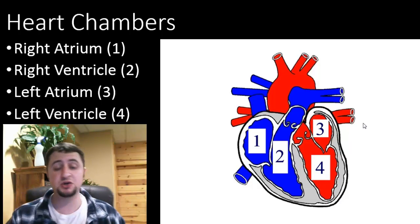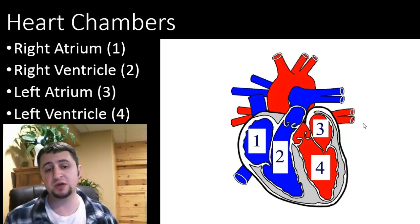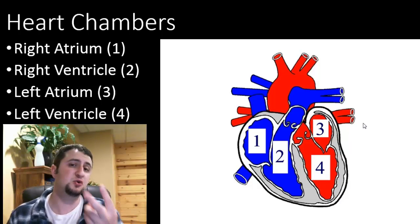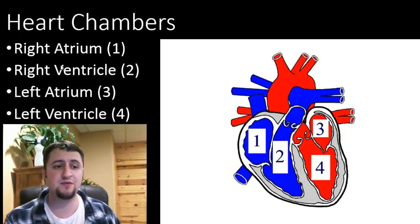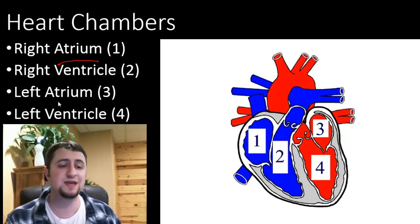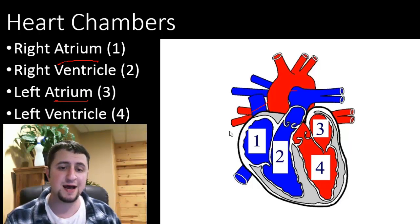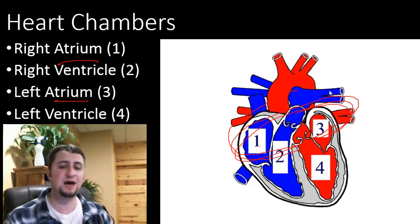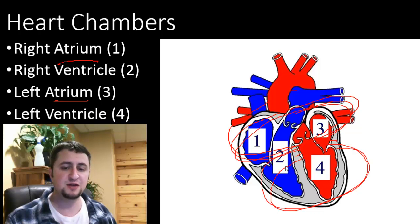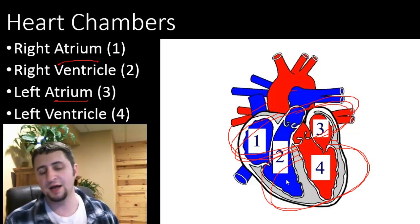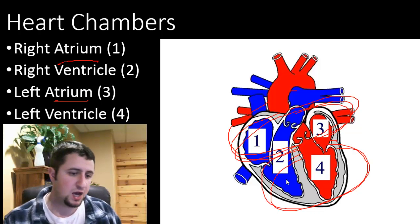We're going to talk about the four major heart chambers. They can be broken down into two types: atriums and ventricles. Atriums are on the top of our heart — everything I'm circling here is the two atriums on the top. And everything on the bottom here is the ventricles on the bottom part of our heart.